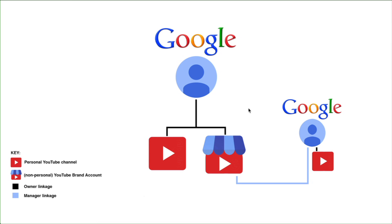Over the years, there have been some changes to how Google accounts and YouTube channels relate to each other, starting in May 2009 when it became possible to have a Google account for a YouTube channel, then in 2011 when it became mandatory, and then we had Google Plus pages and Google Plus profiles from 2012 onwards to about 2016. And now we have only got Google accounts, YouTube channels, and what is called YouTube brand accounts. So these are the three things that we're going to be looking at today.